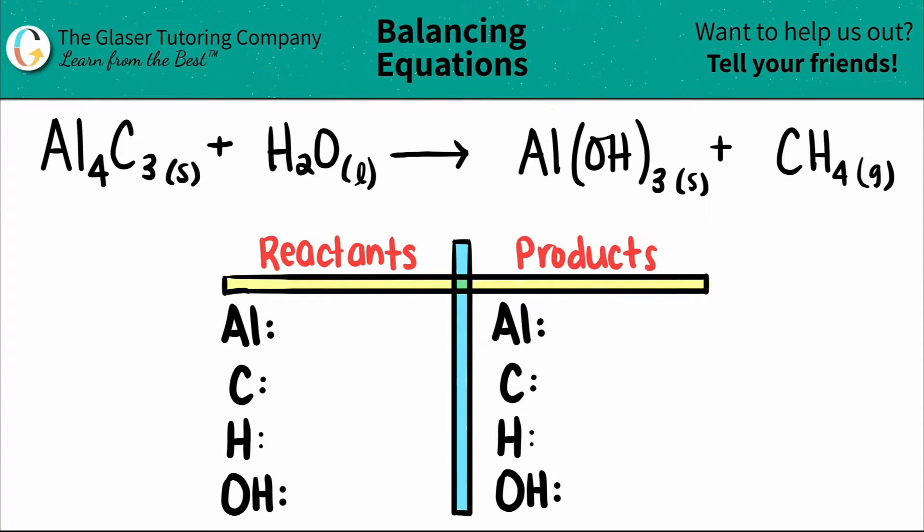Today, we're going to be balancing the equation of Al4C3 plus water, H2O, and that will produce or yield Al(OH)3 plus CH4.